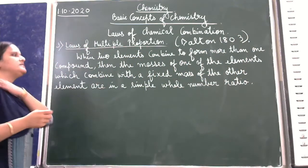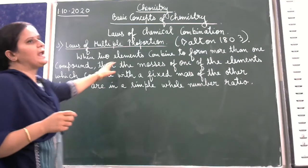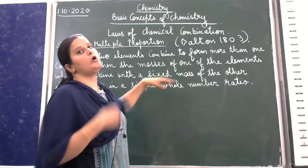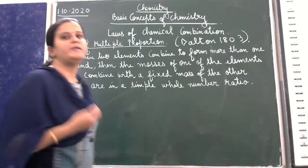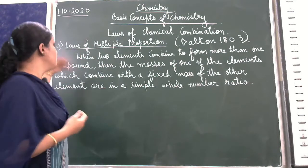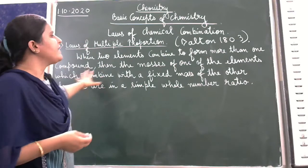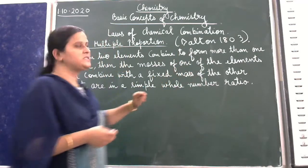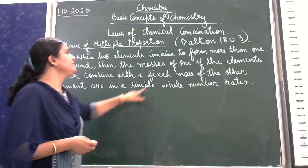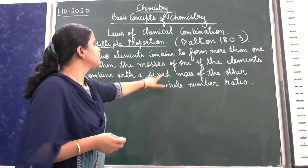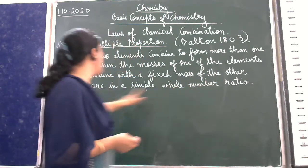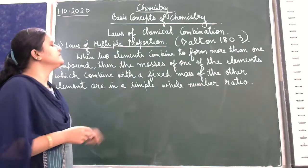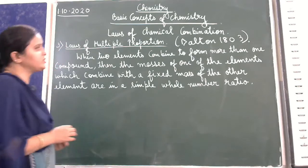The statement says: when two elements combine to form more than one compound, then the masses of one of the elements which combine with the fixed mass of the other element are in a simple whole number ratio.